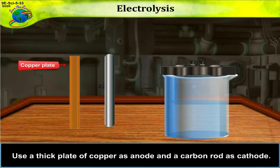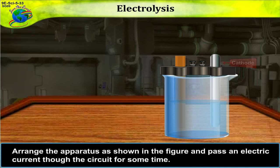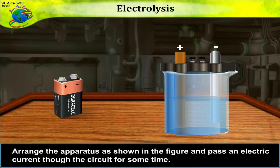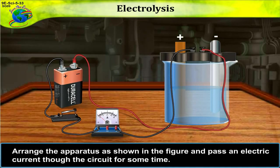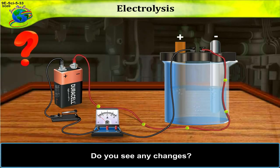Use a thick plate of copper as anode and a carbon rod as cathode. Arrange the apparatus as shown in the figure and pass an electric current through the circuit for some time. Do you see any changes?